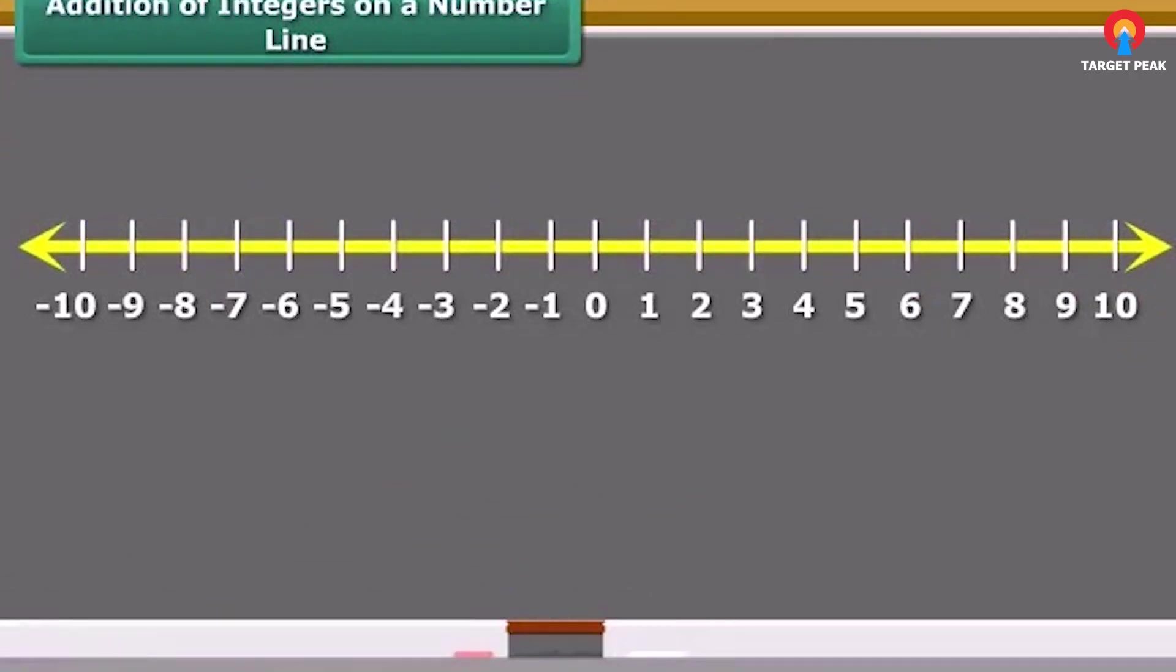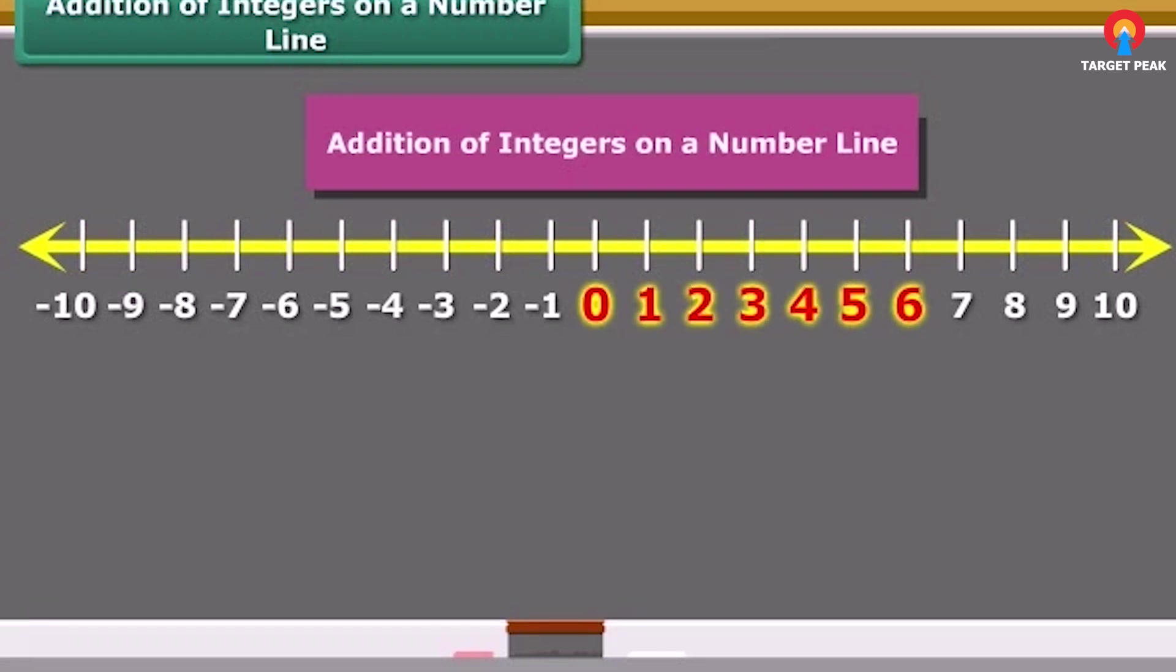Now we learn addition of two positive integers on a number line. If we add six and four on the number line, first move six steps to the right from zero reaching six, and then we move four more steps to the right of six and reach ten. Thus we get six plus four equals ten.